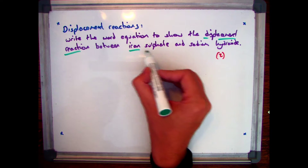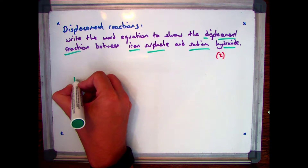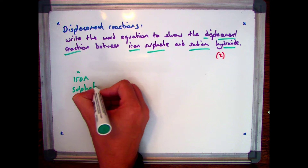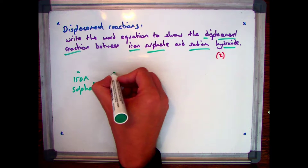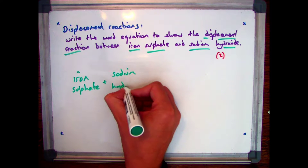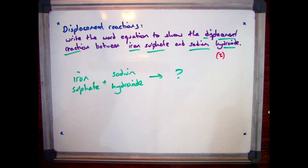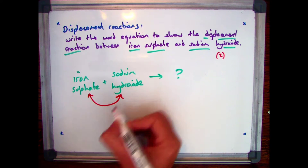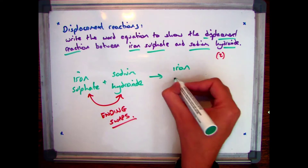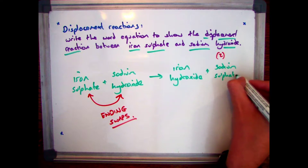For example, write the word equation to show the displacement reaction between iron sulfate and sodium hydroxide. Start off with your reactants: iron sulfate and sodium hydroxide. In any displacement reaction where you have two compounds with two names, all you need to do is take the endings and swap them around. So you take the sulfate and the hydroxide and swap them, meaning you end up with iron hydroxide and sodium sulfate.